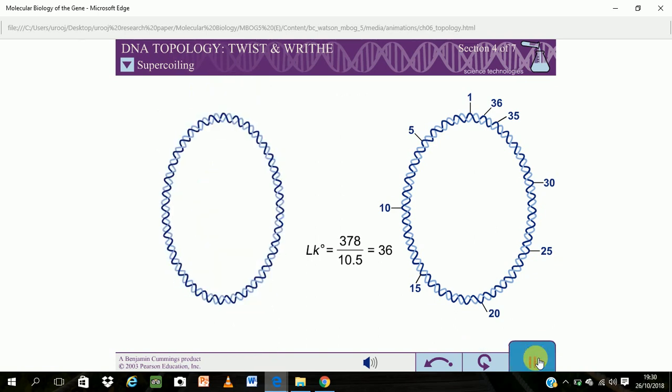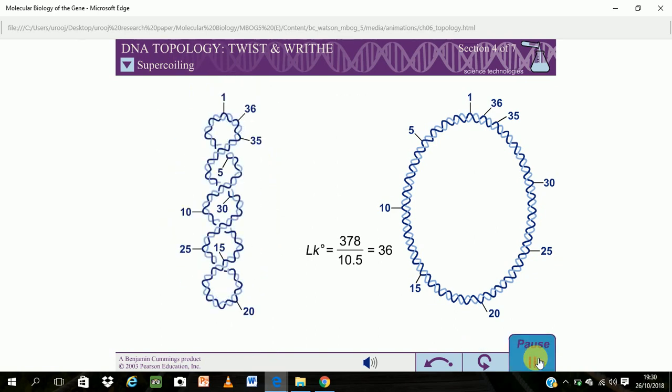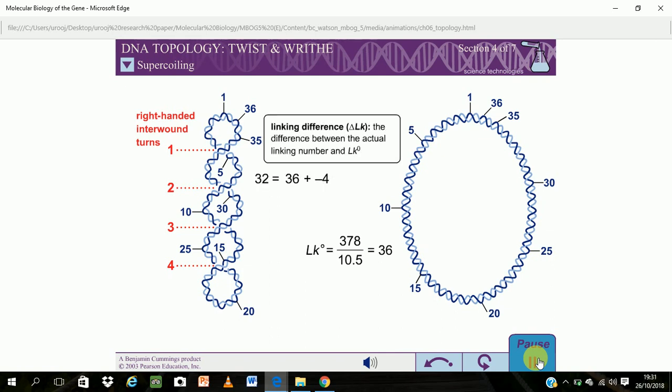If writhes are introduced to the DNA without changing the number of twists, the linking number changes. The difference between the actual linking number and LK0 is the linking difference. If the linking difference is significantly less than zero, the DNA is negatively supercoiled. If the linking difference is significantly greater than zero, the DNA is positively supercoiled.